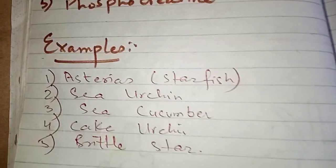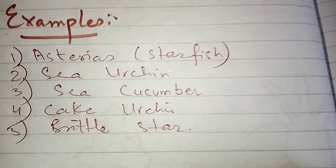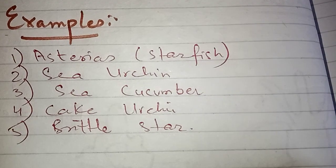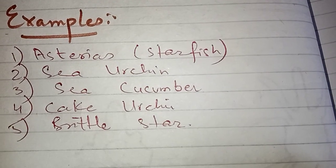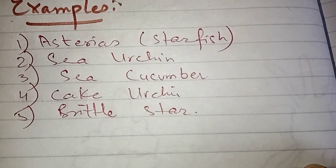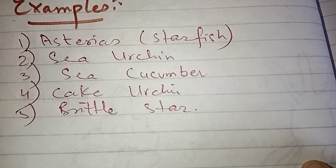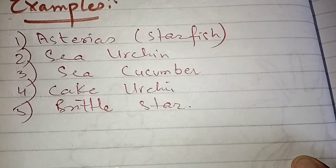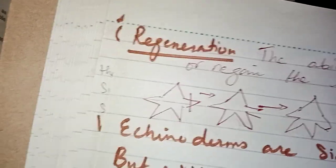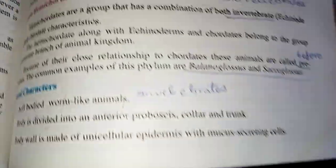Examples of echinoderms include: Asterias, which is a starfish; sea urchin; sea cucumber; cake urchin; and brittle star. These are the main examples of the phylum Echinodermata.